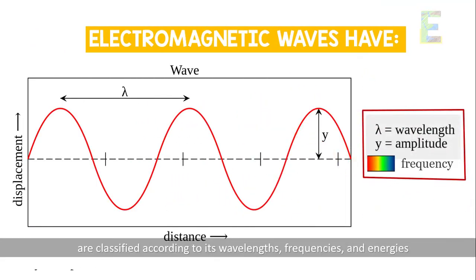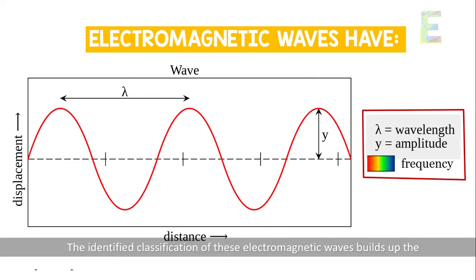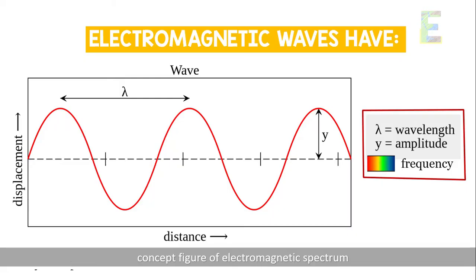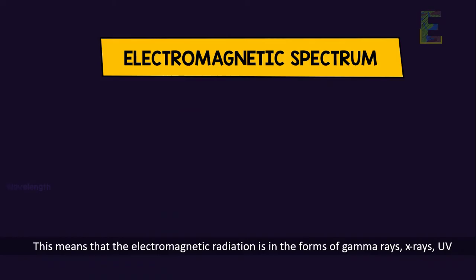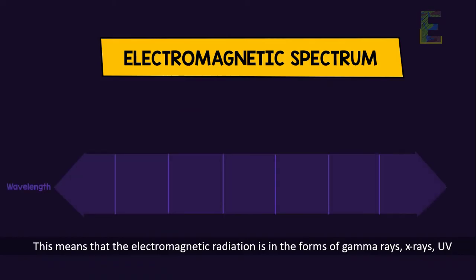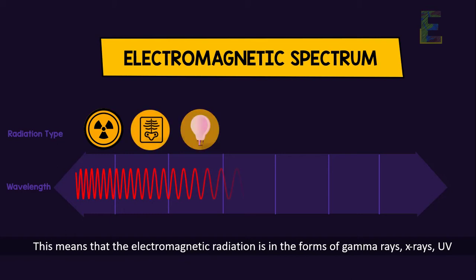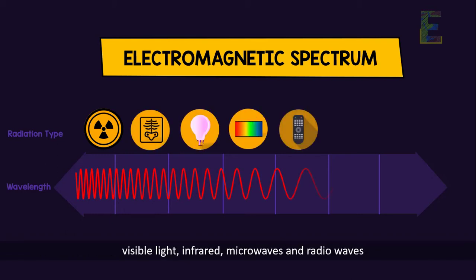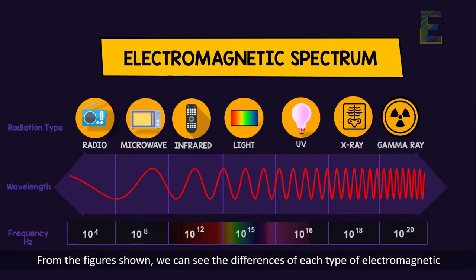The identified classification of these electromagnetic waves builds up the concept figure of electromagnetic spectrum. This means that electromagnetic radiation is in the forms of gamma rays, X-rays, UV, visible light, infrared, microwaves, and radio waves. From the figure shown, we can see the differences of each type of electromagnetic radiation in terms of its wavelength, frequency, and energy.